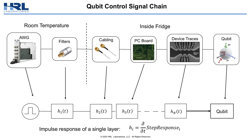A qubit control setup in our lab is probably familiar to most people that have worked in quantum computing labs. We have waveform generators followed by filters, cabling, PC boards, and device traces on our qubit chips. This forms our control and signal propagation chain. We can abstract this system as just a simple waveform generator followed by a series of distortion kernels, where the total distortion of the waveforms that reach our qubit is the convolution of each of these sub-elements.